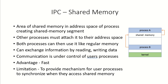Let us take a look at the shared memory technique of inter-process communication. Here, one process — let us say process A — will create an area in its own address space. This will be the area of shared memory in the address space of that process. The other process which wants to communicate will attach this shared memory segment to its own address space. Both processes will then use that shared memory like a regular memory segment, exchanging data by reading or writing from that memory segment.